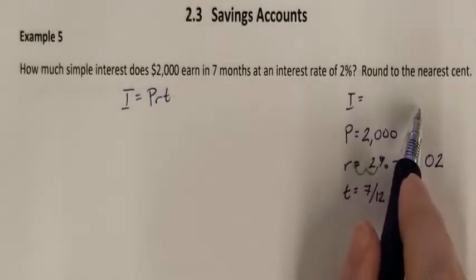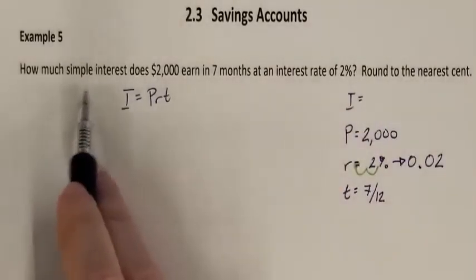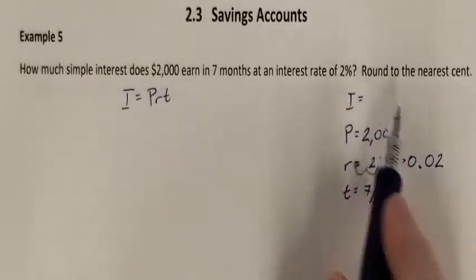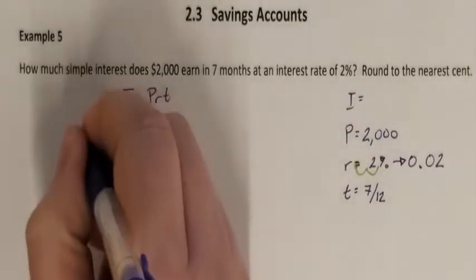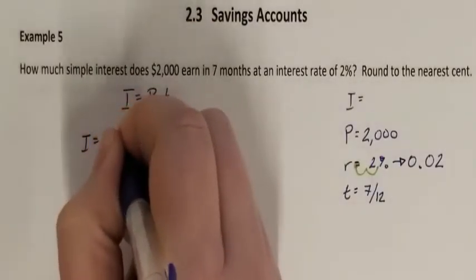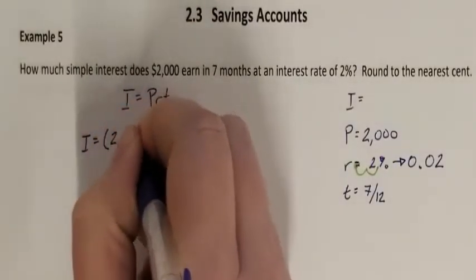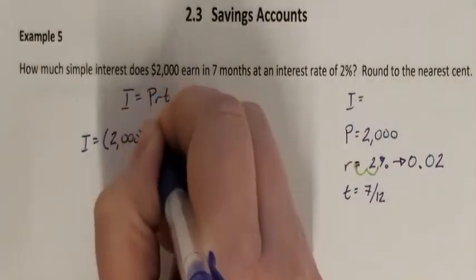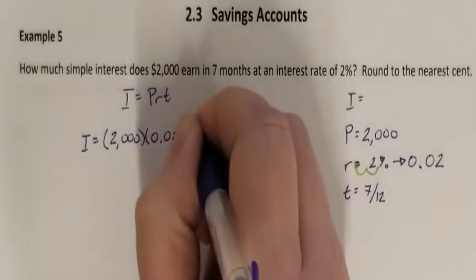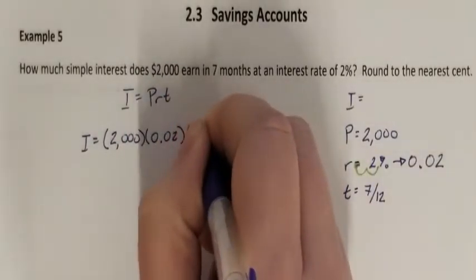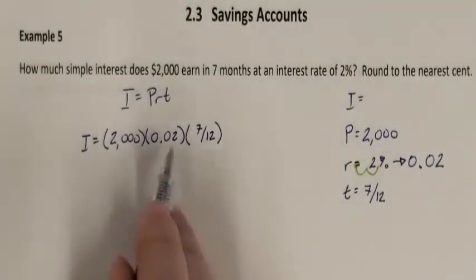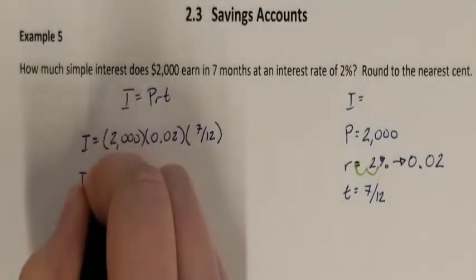I have no I, and that is what the question is asking — how much simple interest do I earn? That is what my I is. So let's calculate I. I equals P times R times T: P is 2,000, R is 0.02, and T is 7 over 12.